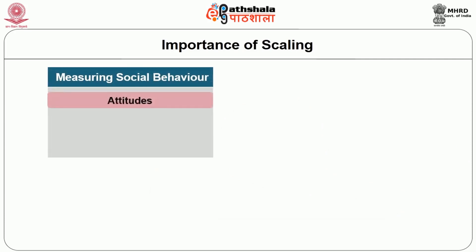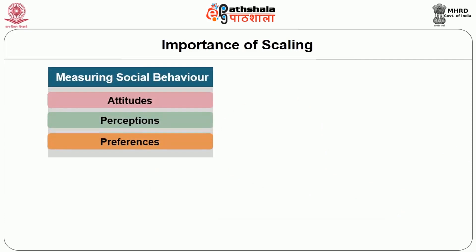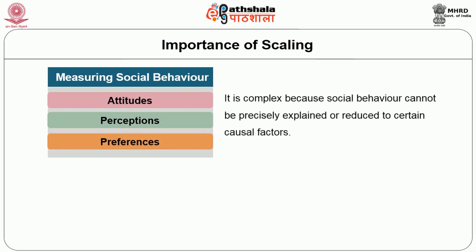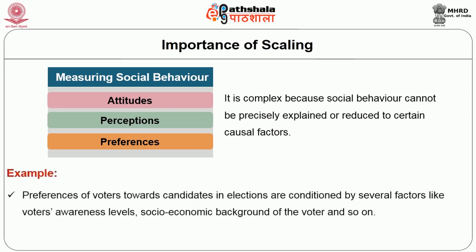However, measuring social behavior — which includes attitudes, perceptions, preferences, or opinions — is difficult because of its complexity. It is complex because social behavior cannot be precisely explained or reduced to certain causal factors. For example, preferences of voters towards candidates in elections are conditioned by several factors like voters' awareness levels, socio-economic background, profile of contesting candidates, parties, and so on.